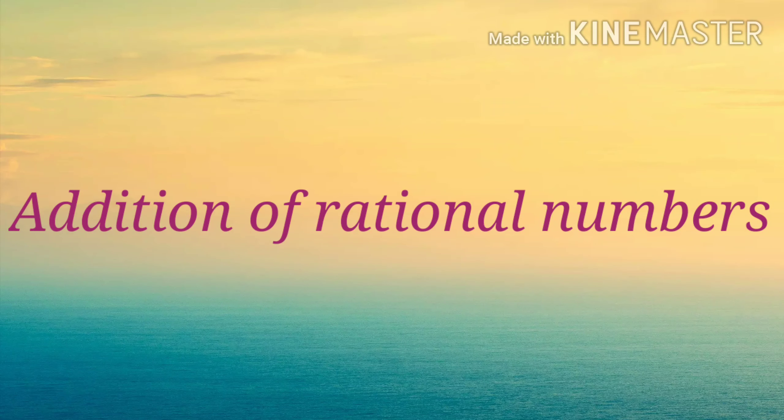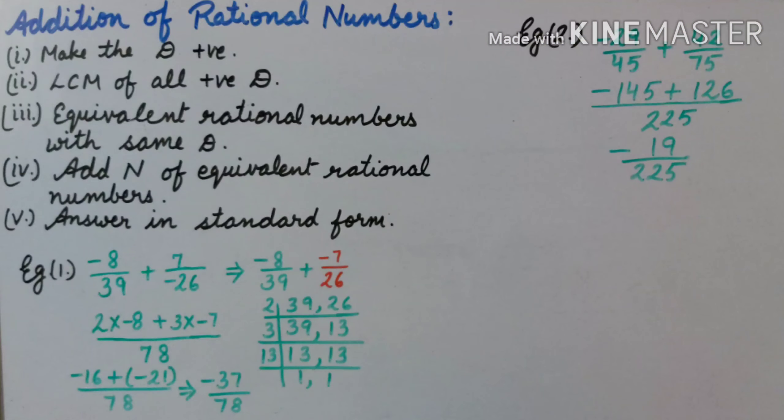In this video, we will see how we can add rational numbers. For addition of rational numbers, we should remember addition of fractions and integers. Steps are the same as comparison of rational numbers. Make the denominator positive if it is negative, then find LCM of all the positive denominators.